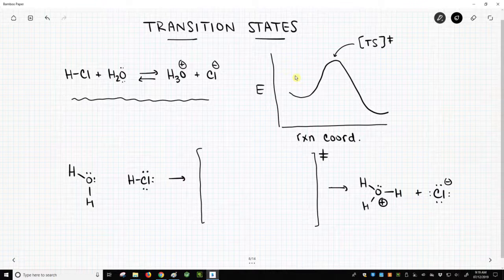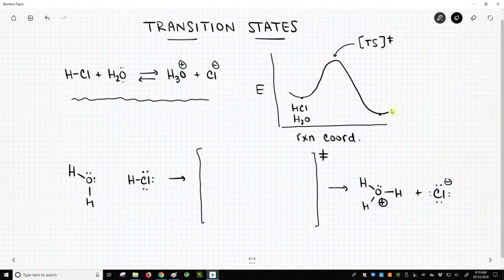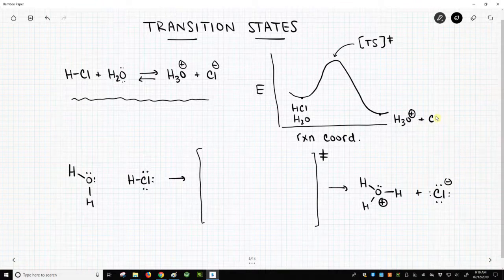Therefore, this is a one-step process. So at the dip on the left, we have our starting materials. Those would be HCl and water. Over here are our products, hydronium plus chloride.